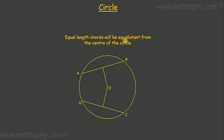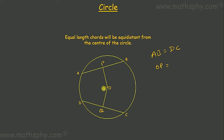The next theorem: equal length chords are equidistant from the center. We have a circle with two chords AB and DC. If AB equals DC, then the distance OP from center O to chord AB equals the distance OQ from center O to chord DC. OP is perpendicular to AB and OQ is perpendicular to DC, and OP will equal OQ.